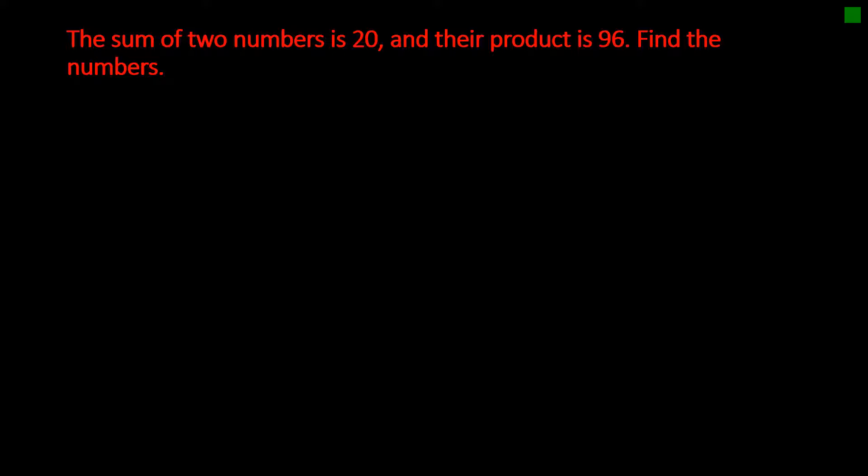Let's look at the first problem. The sum of two numbers is 20 and their product is 96. Find the numbers. So the sum of two numbers, let's say x is a number and y is a number. Their sum is 20 and their product x times y is 96. So let's find x and let's find y.